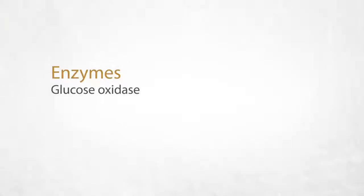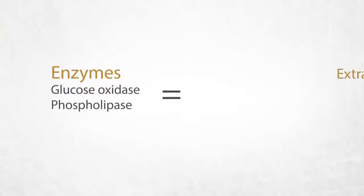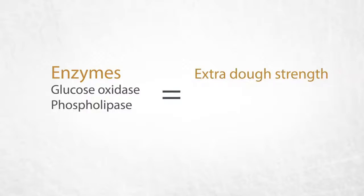Enzymes such as glucose oxidase and phospholipase can be used to provide extra dough strength and to replace traditional chemical dough strengtheners, achieving a cleaner ingredient label.